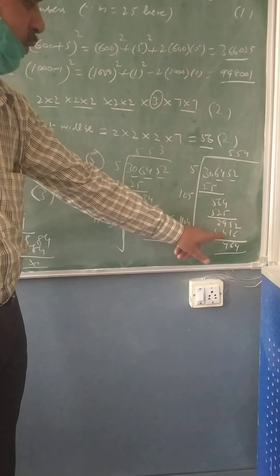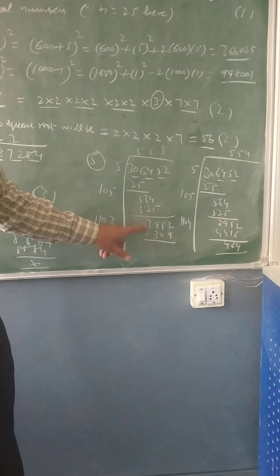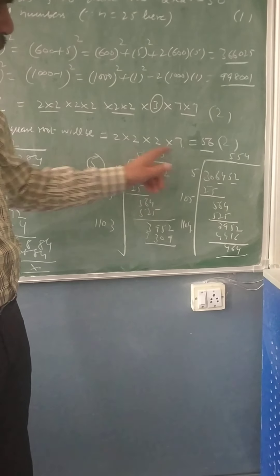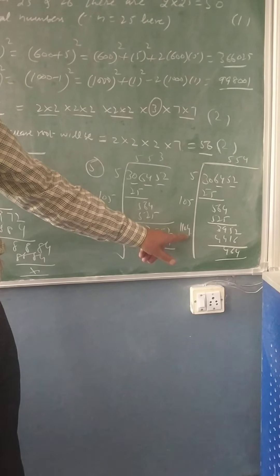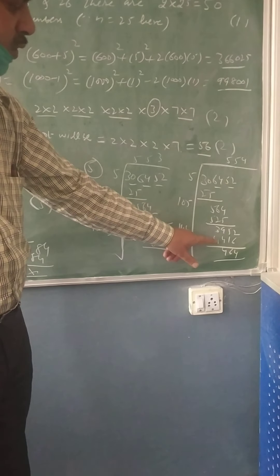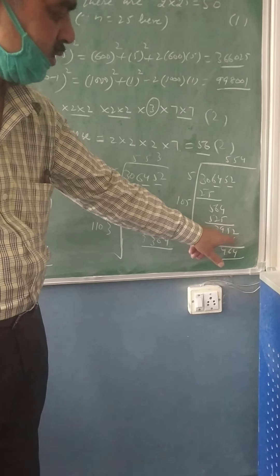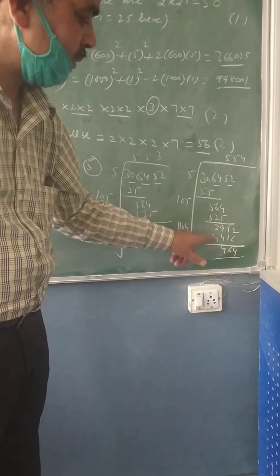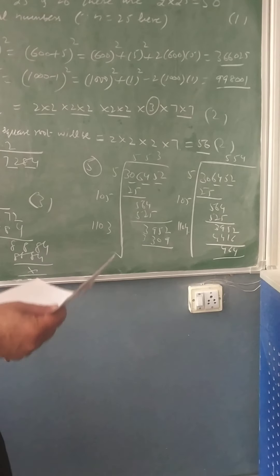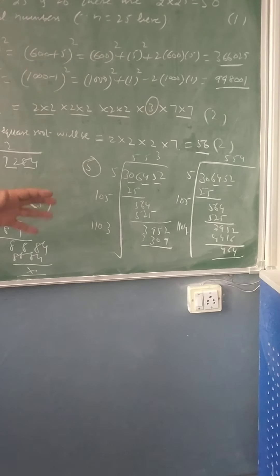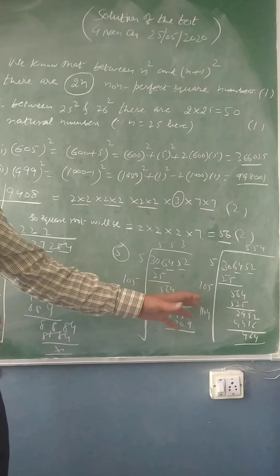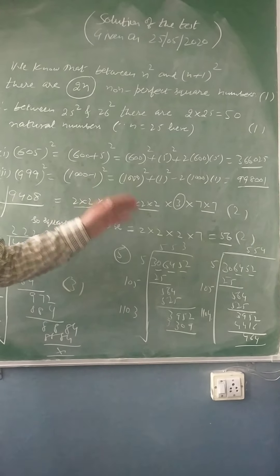Usually we take a number less than the remainder, but here we go to the next perfect square. The next perfect square gives 4416. We subtract the number obtained in the division (3952) from 4416, giving a remainder of 464. Add 464 to 36,452 and it becomes a perfect square. This question was also of 3 marks: full 3 or 0 depending on correctness, though 2 marks may be given if the square root steps are correct and only the last step is missing.